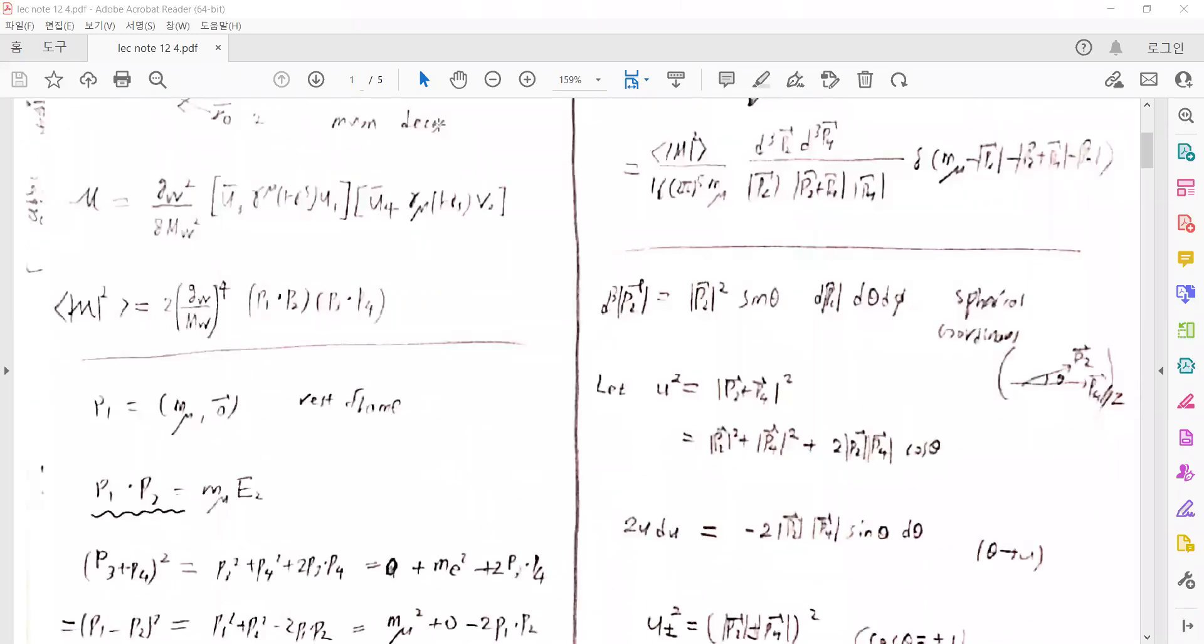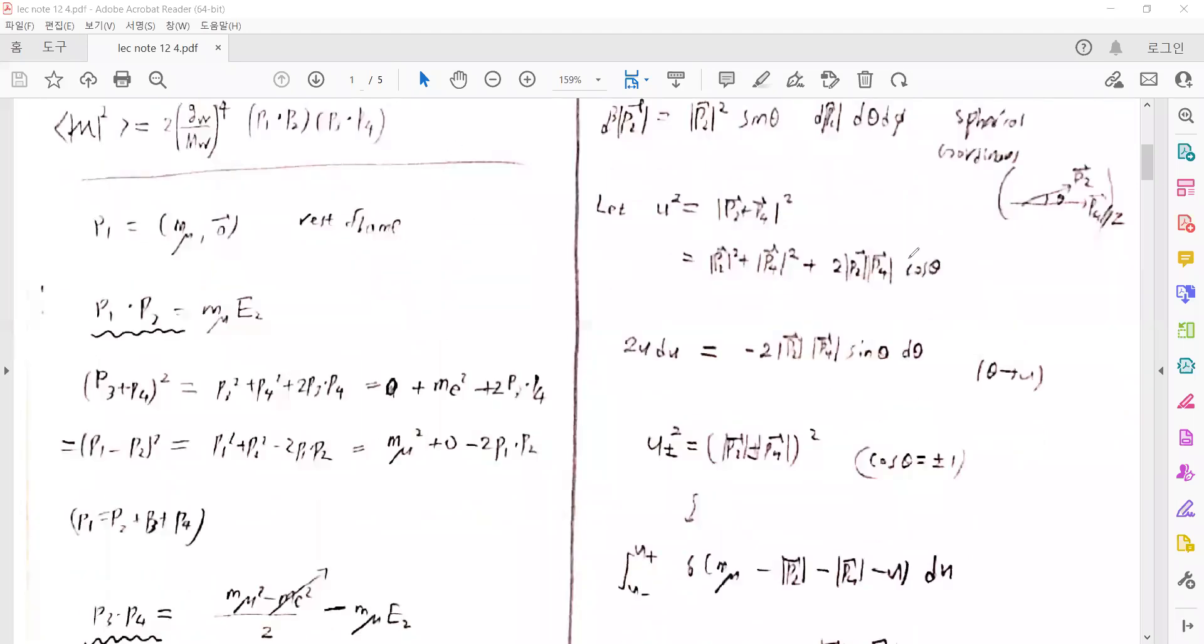We integrate over dP2 using spherical coordinates. P4 is parallel to the z-axis, and P2 is in spherical coordinate representation with theta and phi. Because there are P2 plus P4 terms in the function, we should calculate P2 plus P4 in terms of the spherical coordinates.